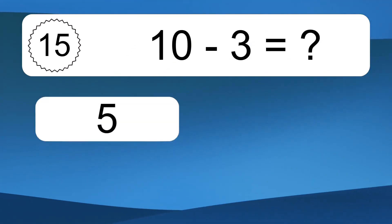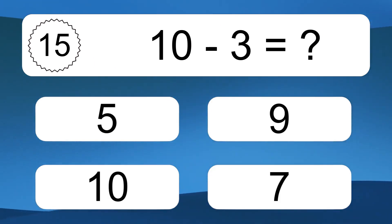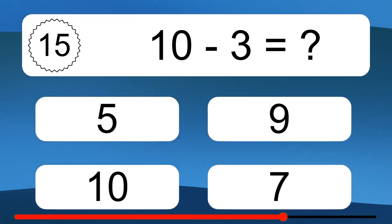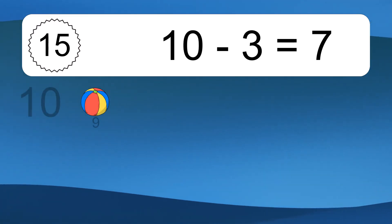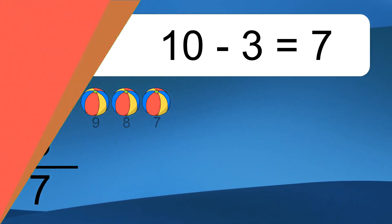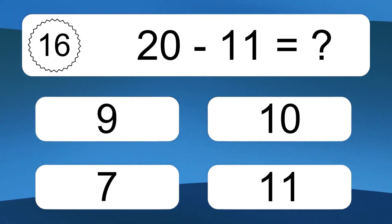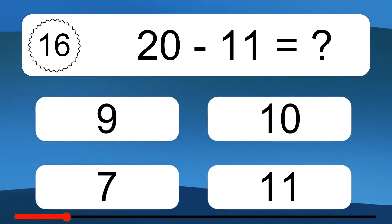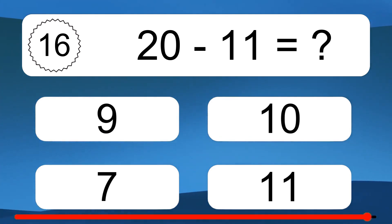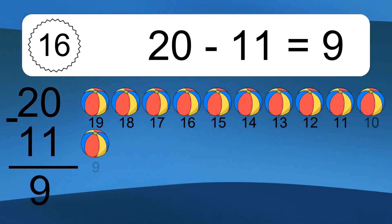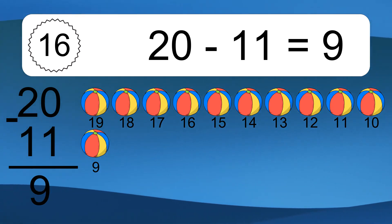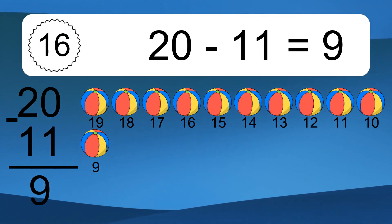10 minus 3 equals what? 10 minus 3 equals 7. Let's count it. 9, 8, 7. 20 minus 11 equals what? 20 minus 11 equals 9. Let's count it. 19, 18, 17, 16, 15, 14, 13, 12, 11, 10, 9.